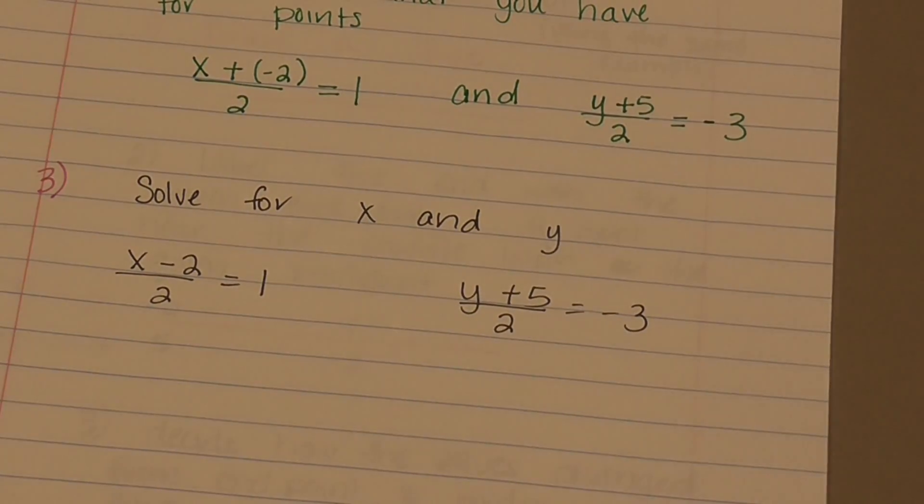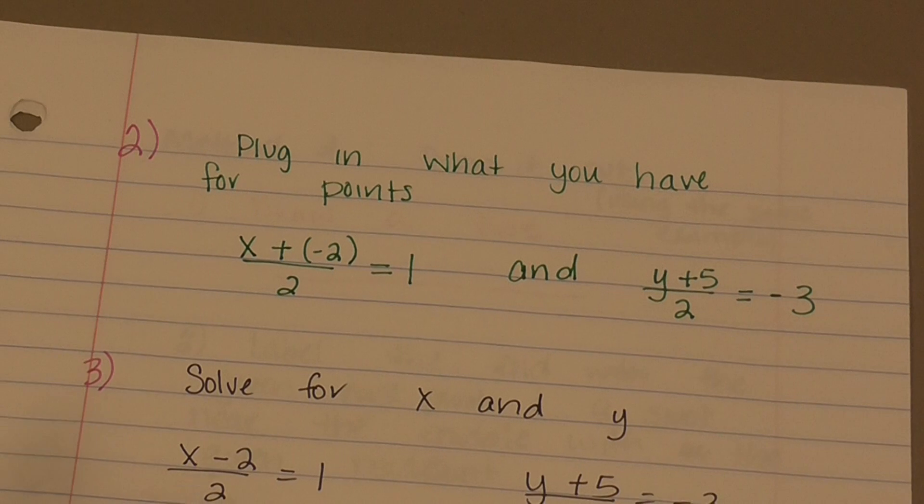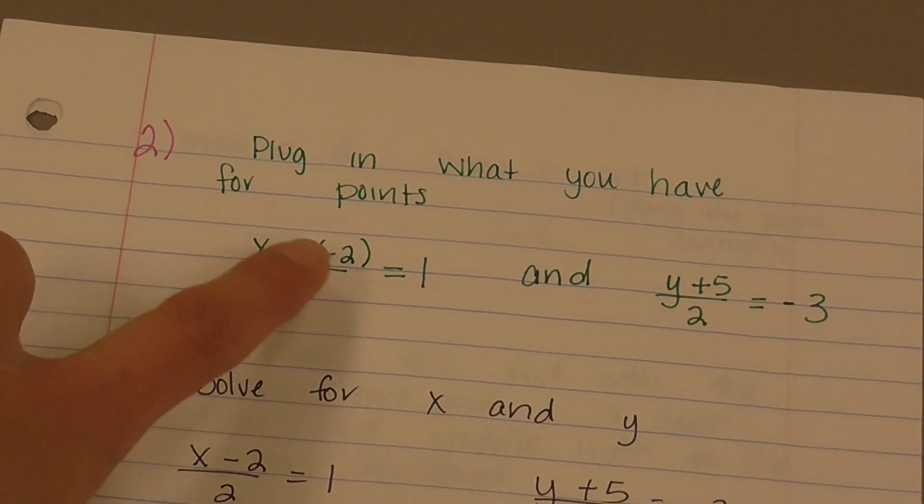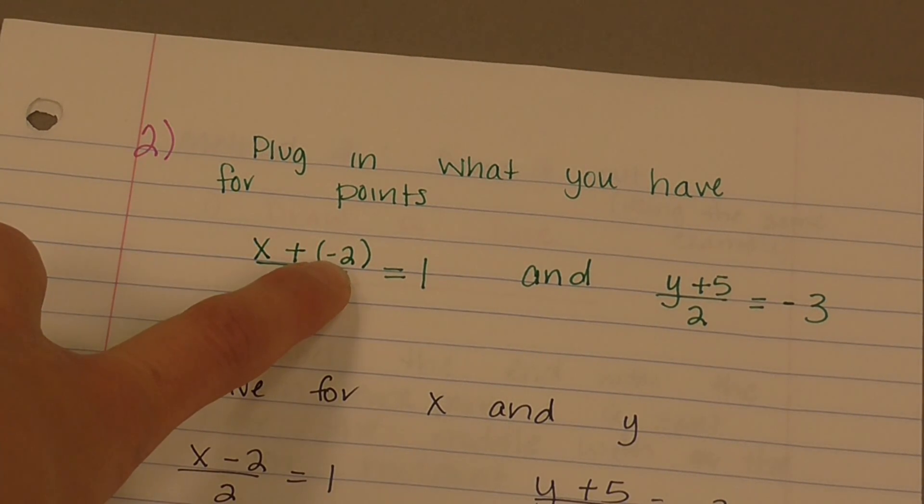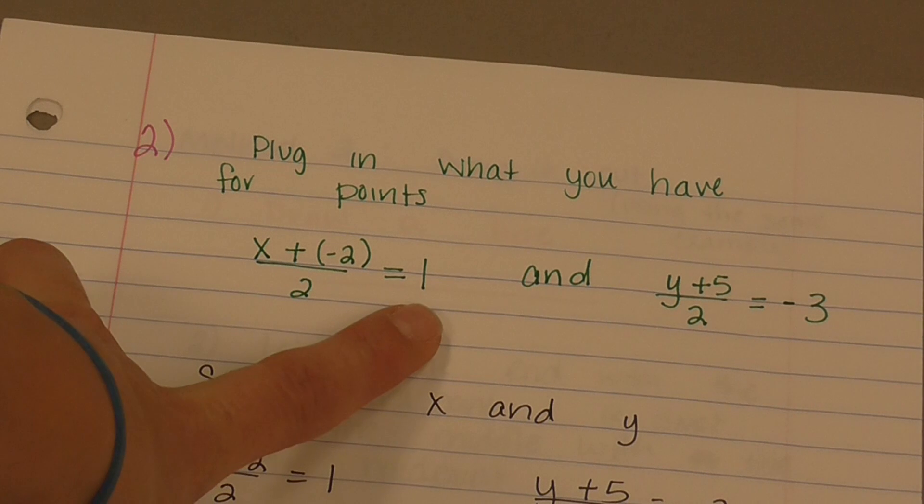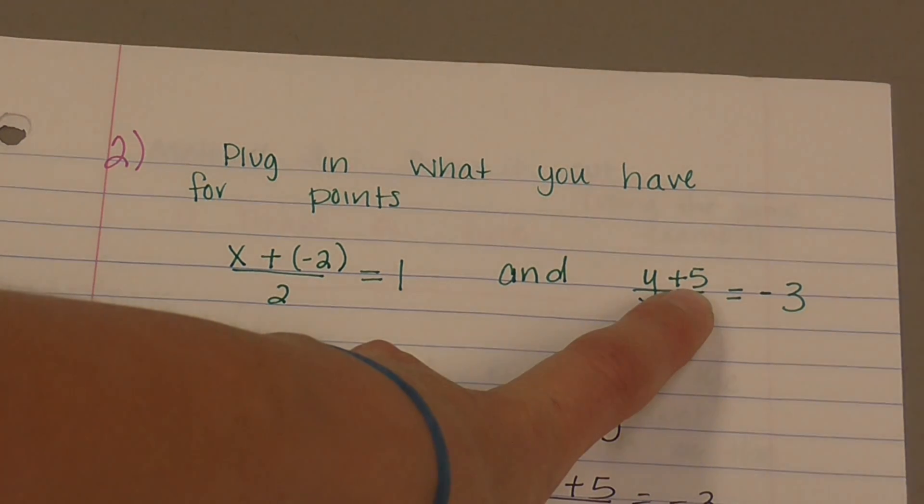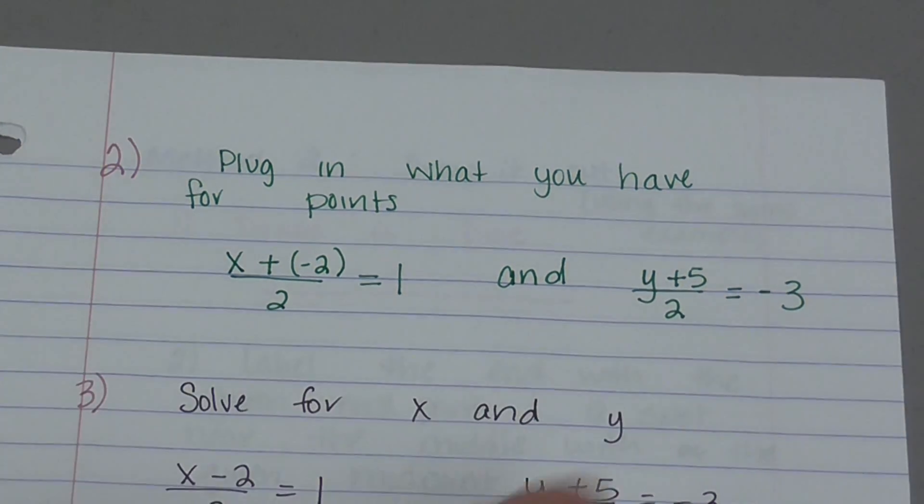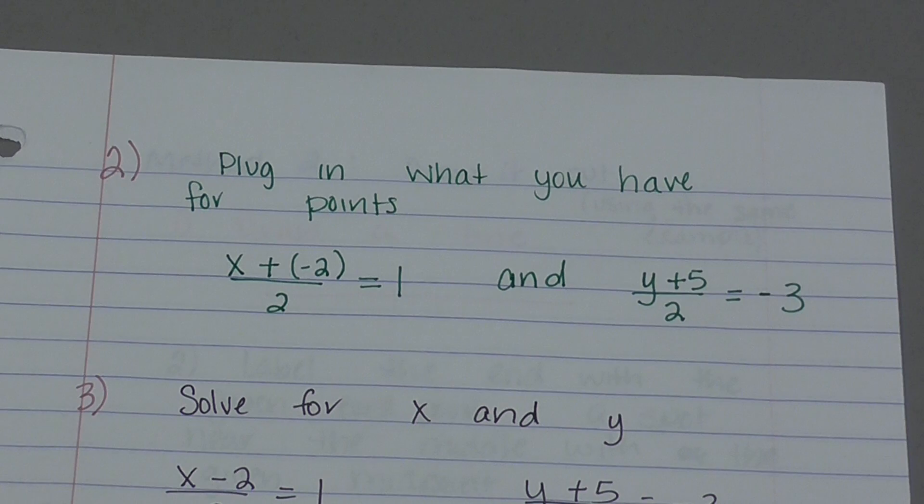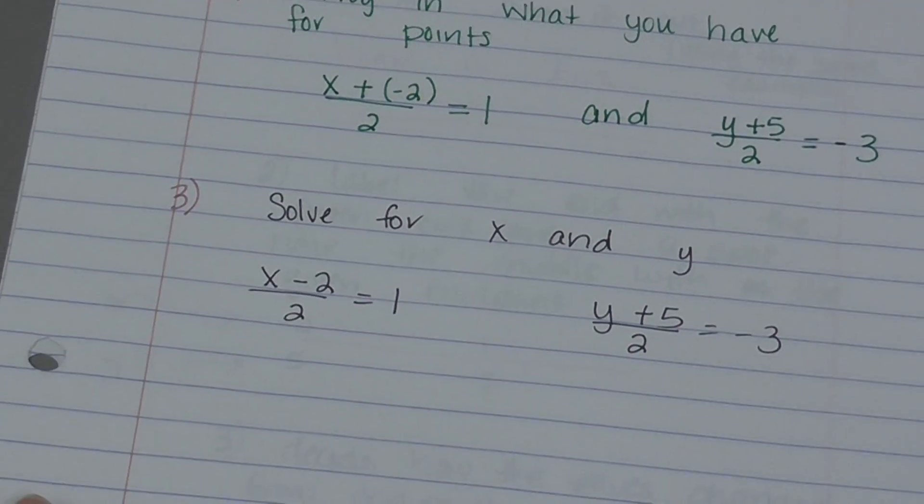So once it's set up, you're going to plug in what you have. I have x as an endpoint and negative 2 as my other endpoint, divided by 2 must equal 1. y is an endpoint for the y value, and the y value for my other endpoint is 5, divided by 2 is negative 3. So I'm just going to plug in what I have. Then we solve for x and y.